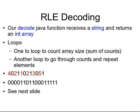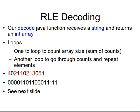Now moving on to the decode function — I would call it a method in Java. It's the opposite of encoding. The decode function receives the encoded string and returns an integer array containing the original elements. As you've seen in my source code, we need some loops: one loop to work out the actual array size, which will be the sum of counts. So the original size would be four plus two plus one plus two plus three plus five.